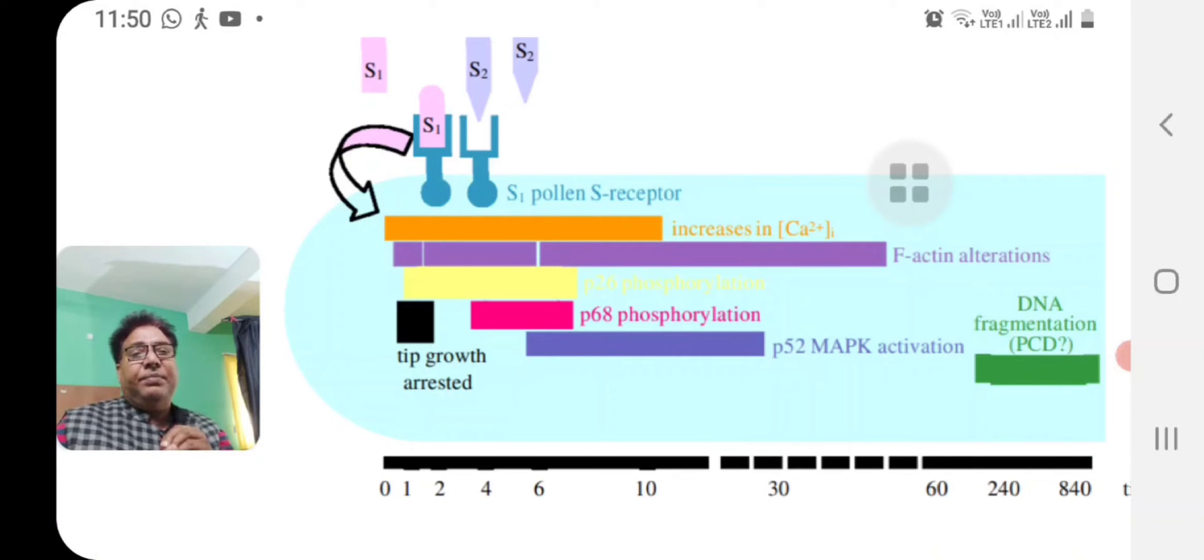What happens is the pistil first releases a protein called S protein. This is allele specific S protein. These S proteins are bound with the receptor, the male-determinant receptor present on the pollen tube. Probably because of ligand gated channels, the receptor opens the gate for calcium ions to enter into the cytosol of the pollen tube. So calcium sequestration occurs. It has been found that calcium sequestration occurs within one to two minutes of binding of the pollen with the stigma.